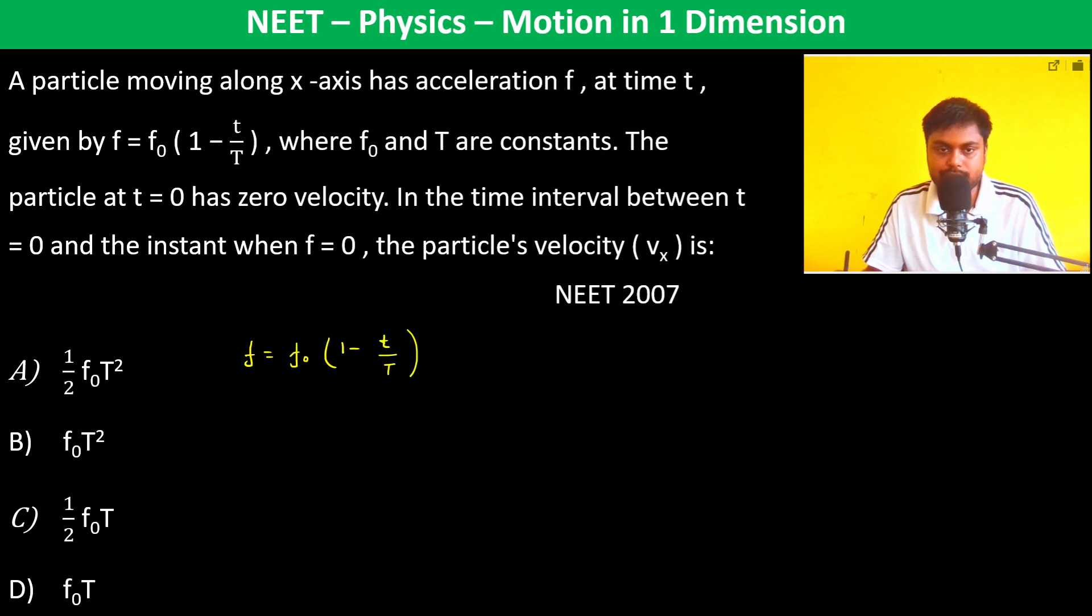The particle at t equals 0 has zero velocity. In the time interval between t equals zero and the instance when f equals zero, the particle's velocity vₓ is: